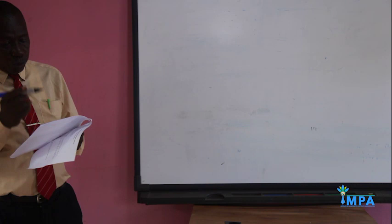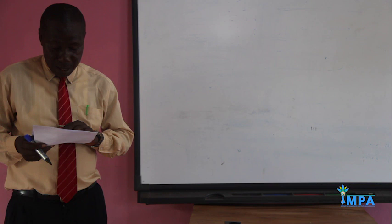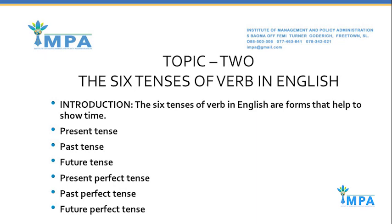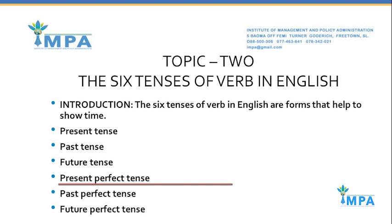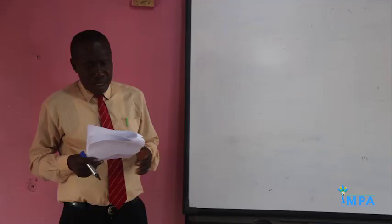I hope you read this and answer it according to what has been lectured. Then move on to topic two, which is the six tenses of verbs in English: present tense, past tense, future tense, present perfect tense, past perfect tense, and future perfect tense.